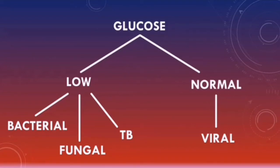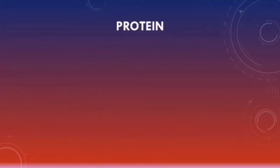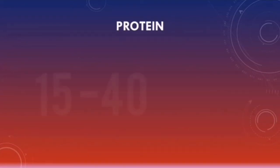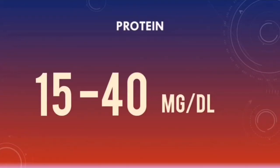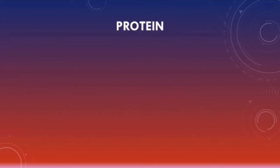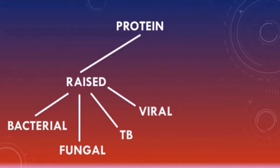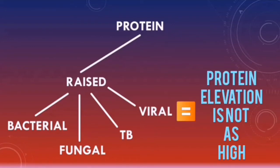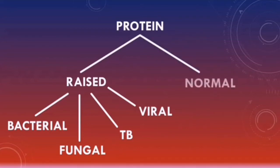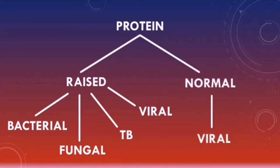The normal range for the CSF protein level is between 15 to 40 milligrams per deciliter. The CSF protein can be raised in all types of meningitis, but in viral meningitis, the protein elevation is not as high compared to the other types. If the CSF protein is normal, that can indicate a viral meningitis.